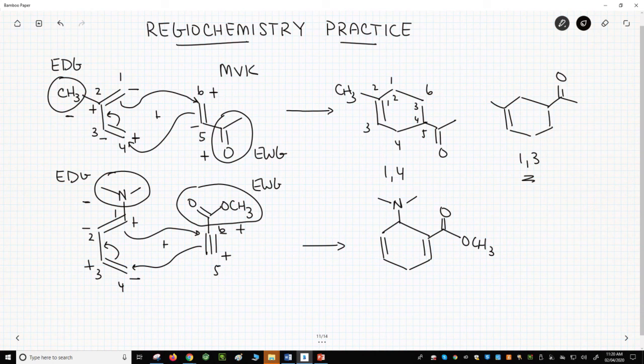So if we number our positions, the EDG and EWG are on adjacent carbons. So this is the 1-2 product, and this would be the expected major regoisomer.